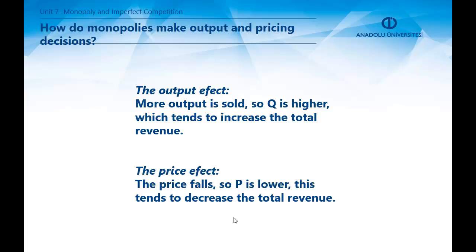The marginal revenue of a monopolist is very different from that of a perfectly competitive firm. A perfectly competitive firm produces a small portion of market output and can sell any quantity at the market price. A monopolist, on the other hand, must lower its price to sell more, moving down along the demand curve. When a monopoly increases the amount it sells, this action has two effects on total revenue.